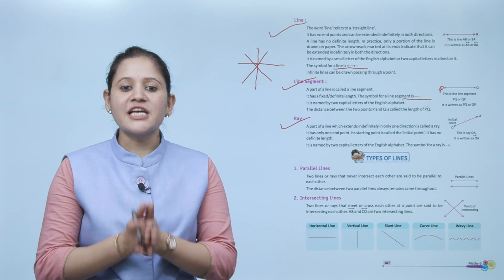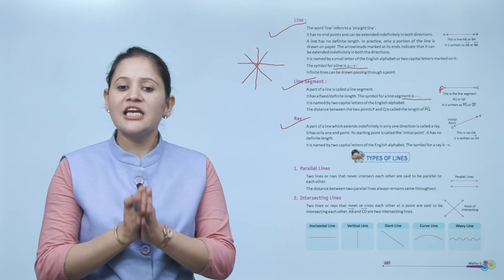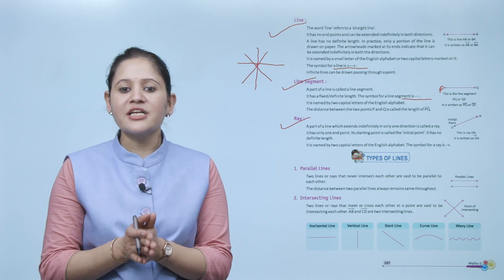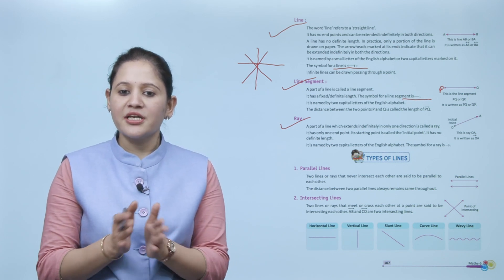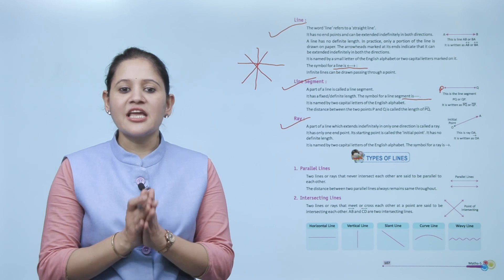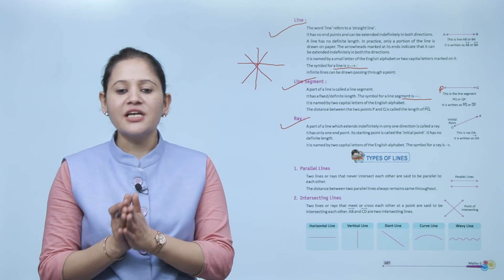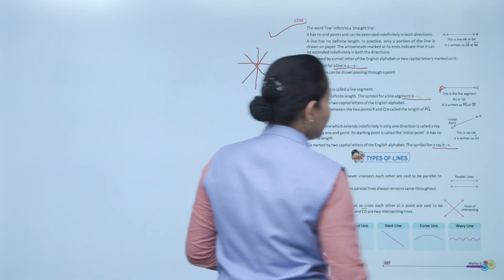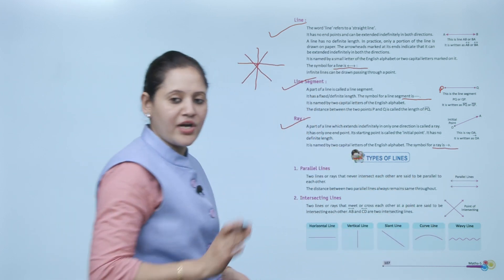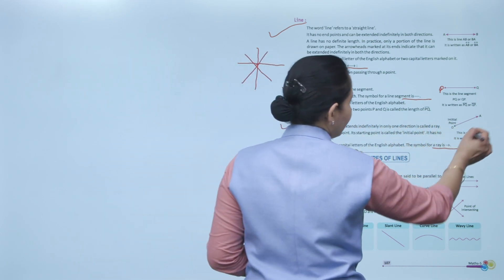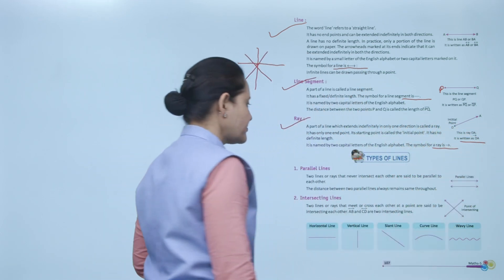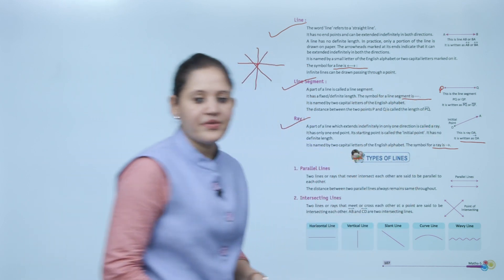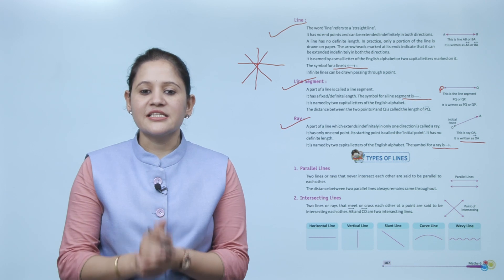A ray is a part of a line which extends indefinitely in only one direction. It has only one end point — its starting point is called the initial point. It has no definite length and is named by two capital letters of the English alphabet. The symbol of a ray is a one-sided arrow. Ray OA has one starting point O.